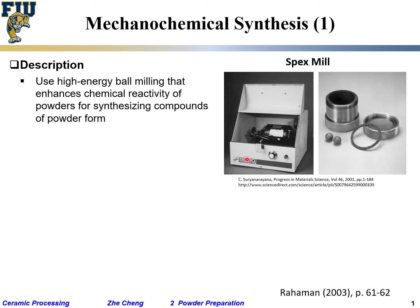Here I'm showing an image of an apparatus that people commonly use for lab-scale mechanochemical synthesis, called a SPEX mill — it's a milling machine. You use milling balls, put the powder into a container jar, close and secure it, and it essentially shakes it. During this shaking, due to high energy impact, the different materials may undergo chemical reactions.